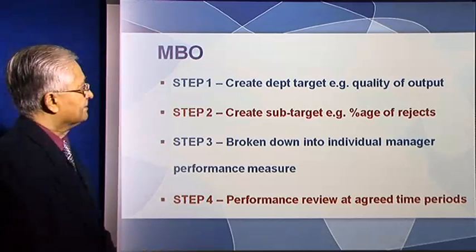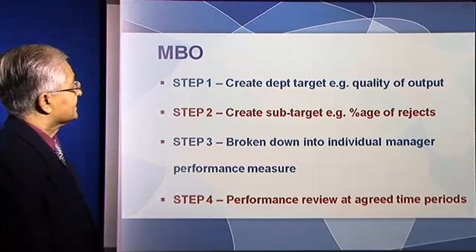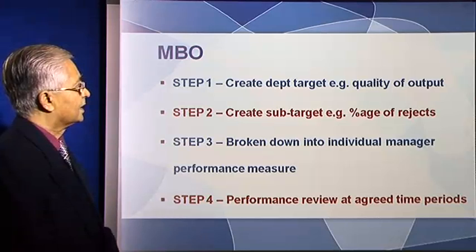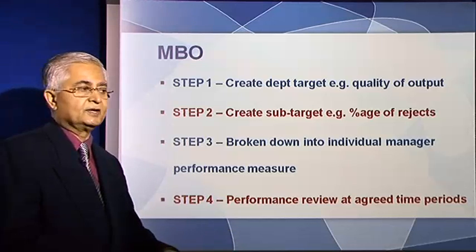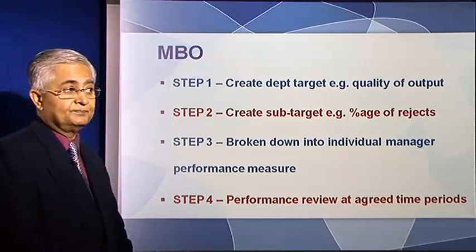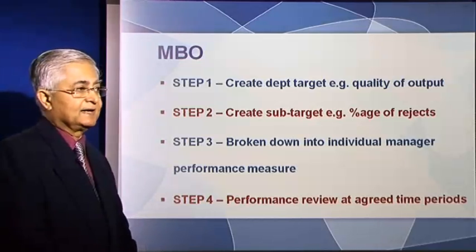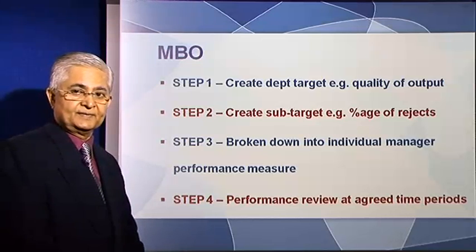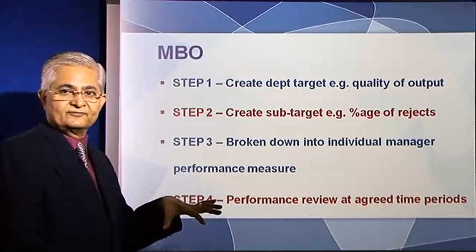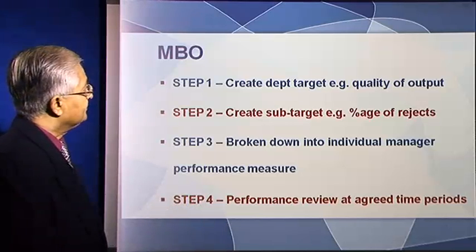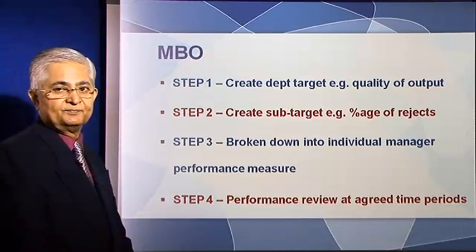If you look at the manufacturing department, the department target could be to improve the quality of output. This is something which has come from the corporate objective. The corporate objective might well be to enter a new market segment, and the new market segment might have more demanding customers. Hence, quality standards within the company need to necessarily improve. So, from the corporate objective we come to the departmental objective, which is to improve the quality of output. This is step one.